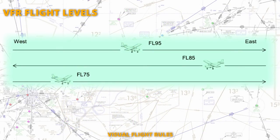If you're flying VFR, we adopt the same principle in terms of odd and even flight levels. The only difference is for VFR we add 500 feet. So if I was flying IFR eastbound I could fly at 9,000 feet, but flying VFR I'd have to choose a flight level of 7,500 feet or 9,500 feet.